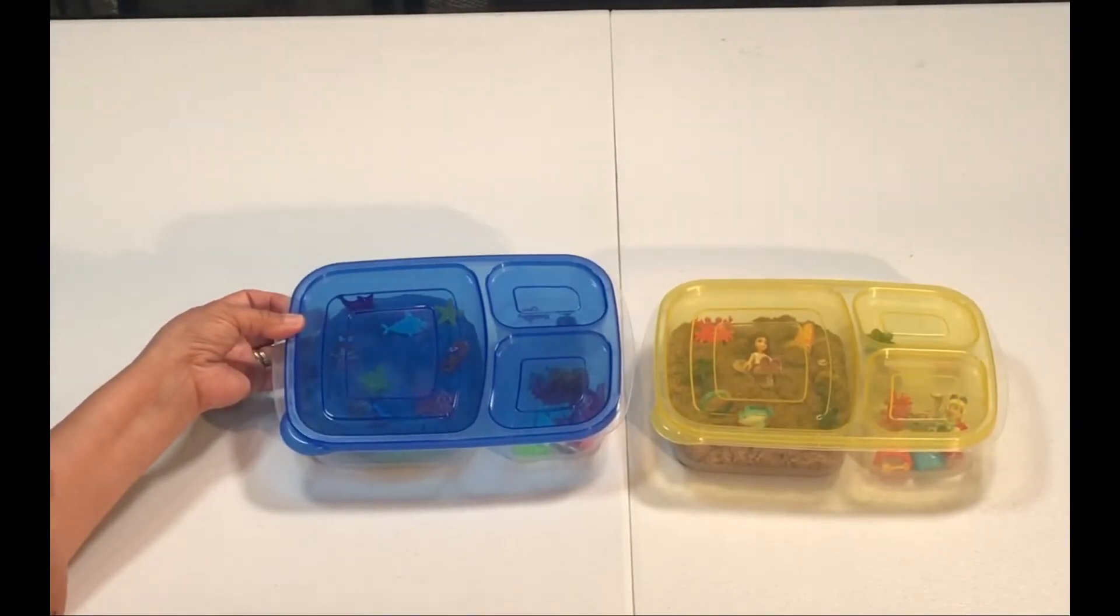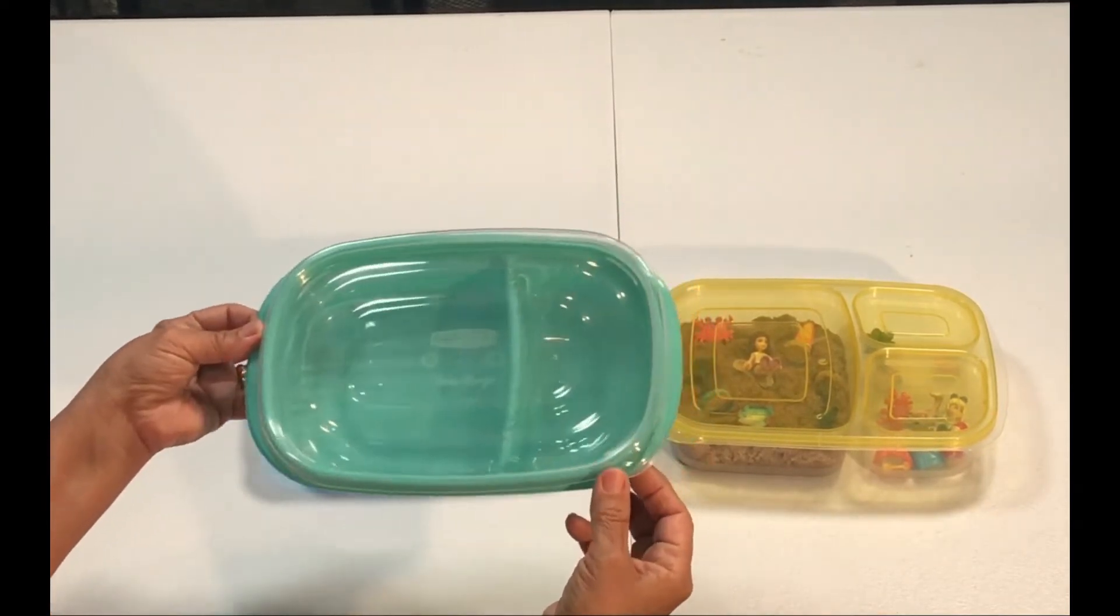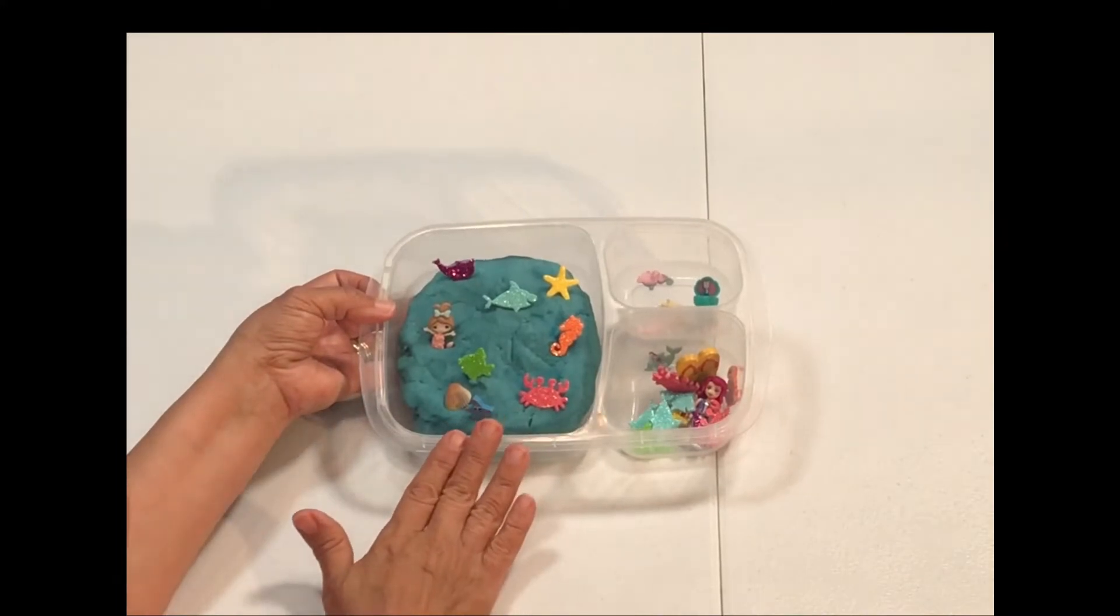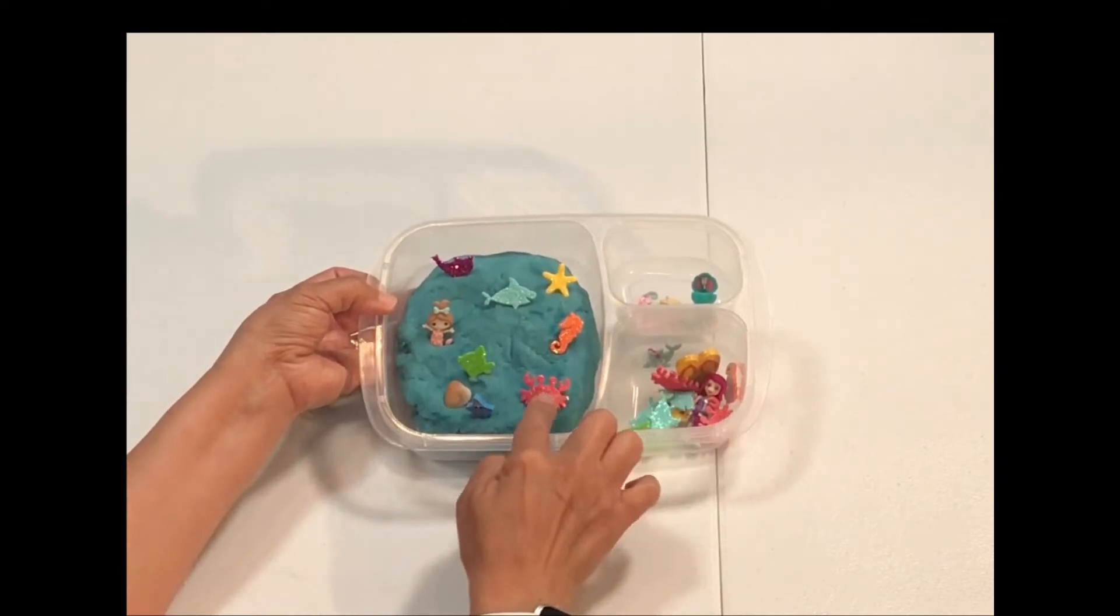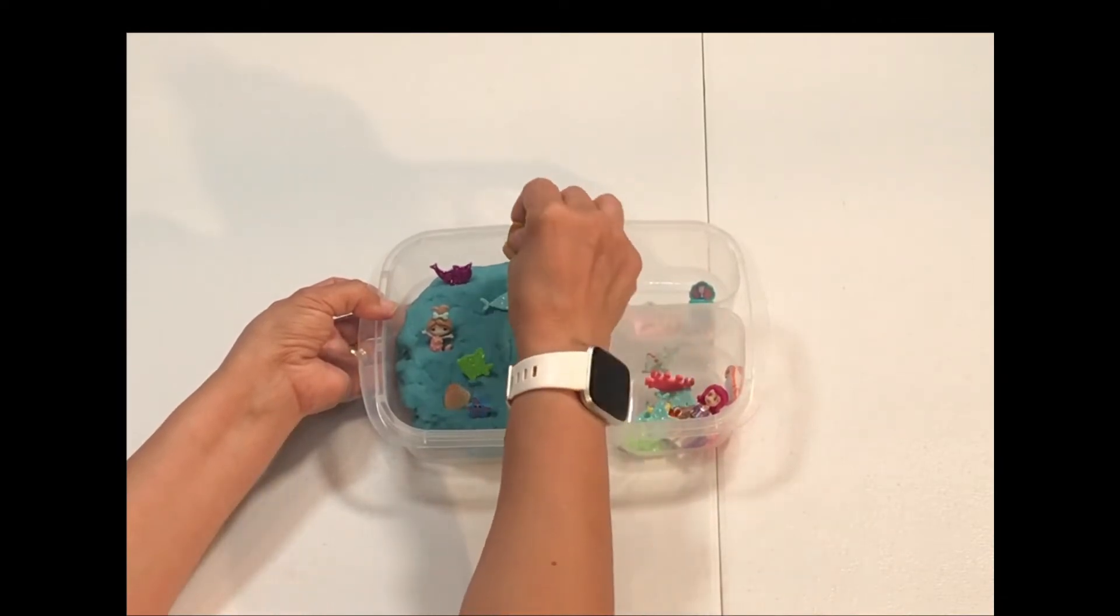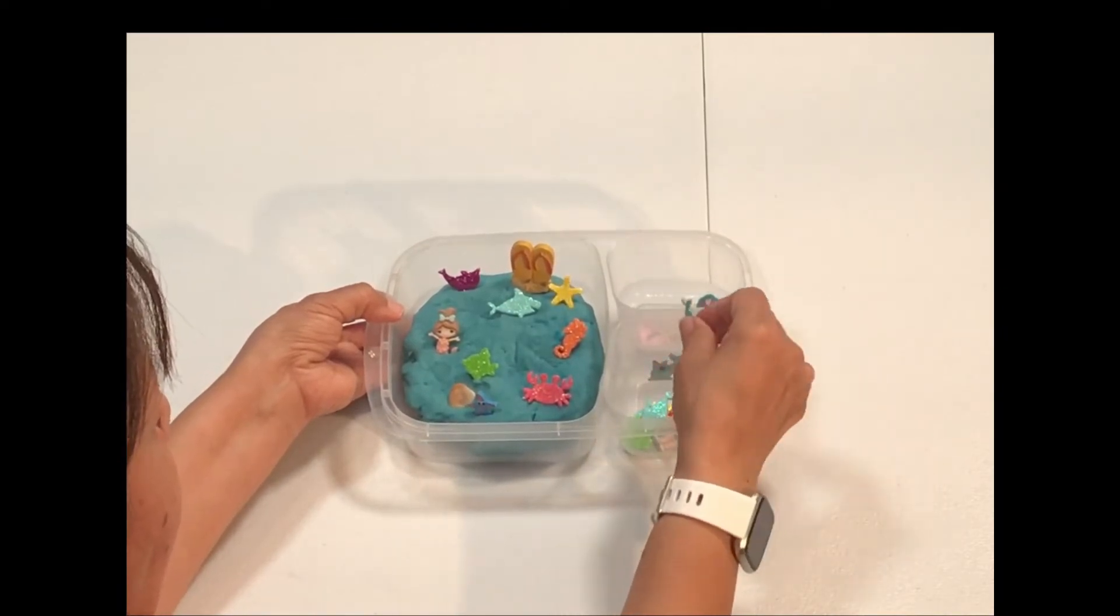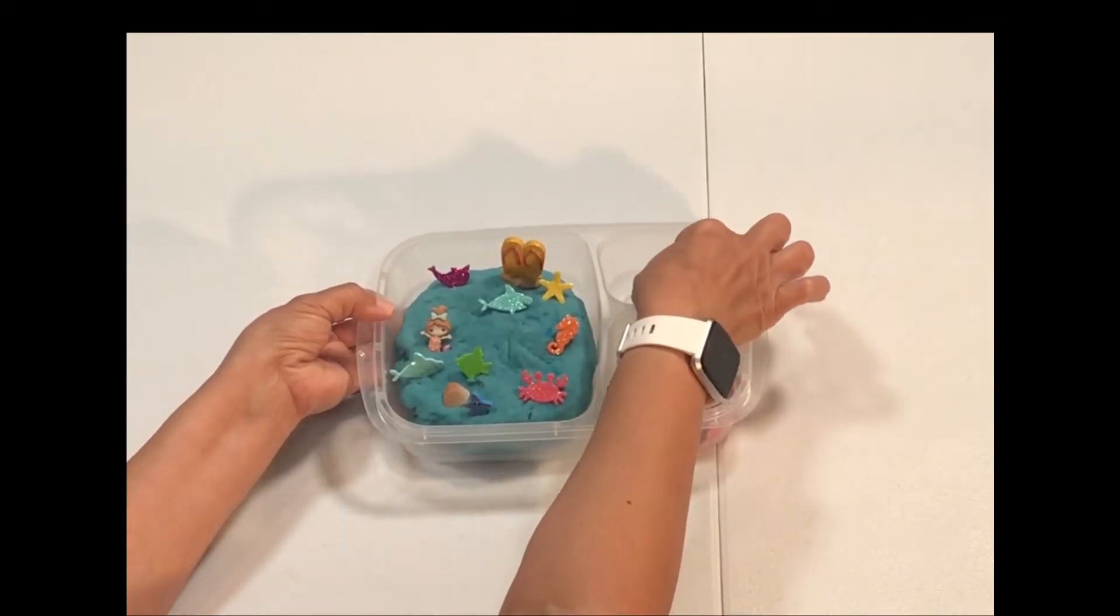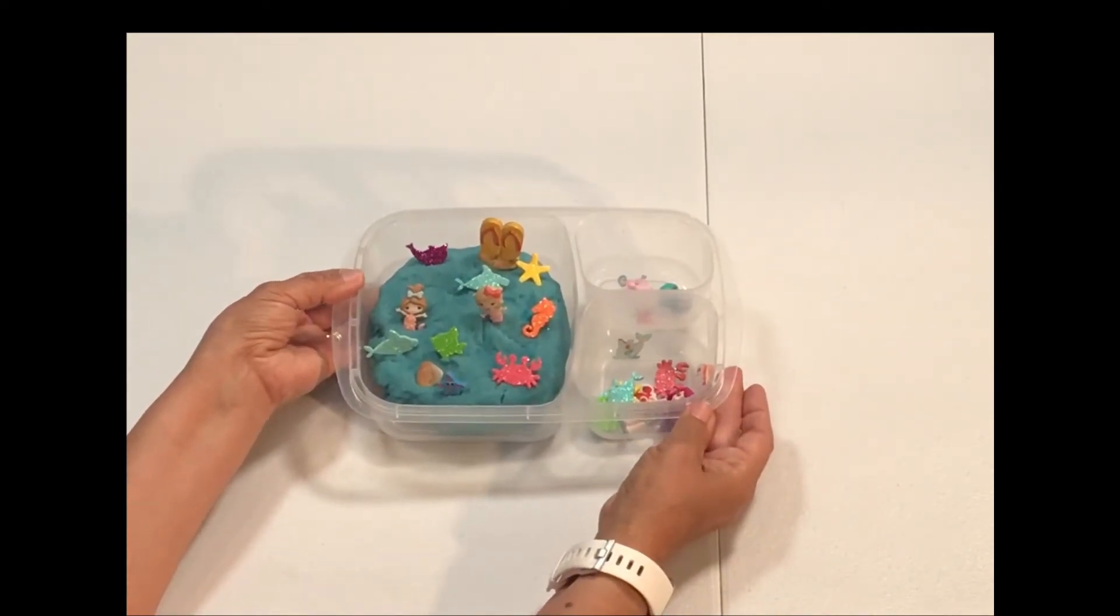I put together these activity boxes using these food storage containers. These are super fun. For this Play-Doh activity box, I have some Play-Doh that I made. I have stickers. I have these from Dollar Tree. These are little sandals and then whatever you have at home, some seashells, and your child will have so much fun just playing with this little Play-Doh activity box.